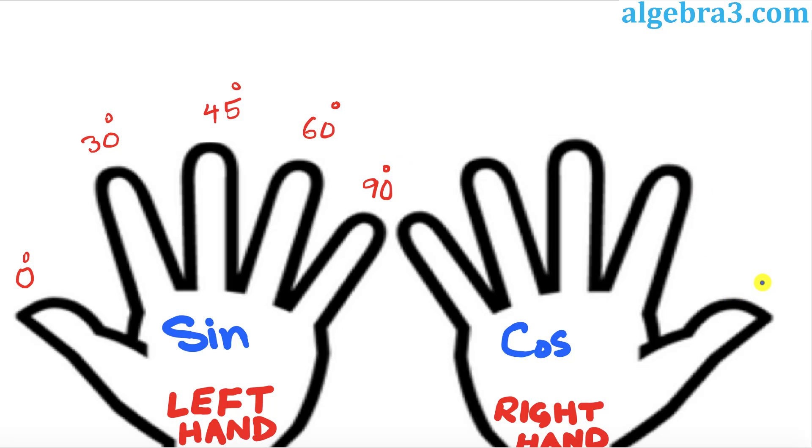Likewise, we're going to start again from the right hand. Your thumb is 0 degrees, index finger 30 degrees, middle finger 45 degrees, ring finger 60 degrees, and your pinky is 90 degrees. Now you can see not only your hands are symmetric, but all these angle values are symmetric as well.